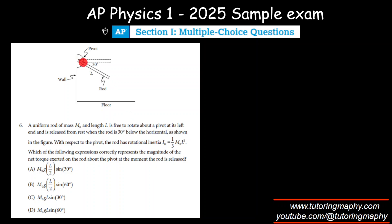It's released when the rod is actually 30 degrees below the horizontal. With respect to the pivot, the rod has a rotational inertia with a given expression. Which expression correctly represents the magnitude of the net torque on the rod about the pivot at the moment the rod is released?